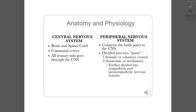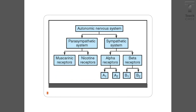We have two parts to our nervous system. There's the central nervous system, which is our brain and spinal cord — our command center. This processes all the sensory information and it goes all the way through the CNS. Then there's the peripheral nervous system, which is broken down into two other systems: the parasympathetic and the sympathetic system.